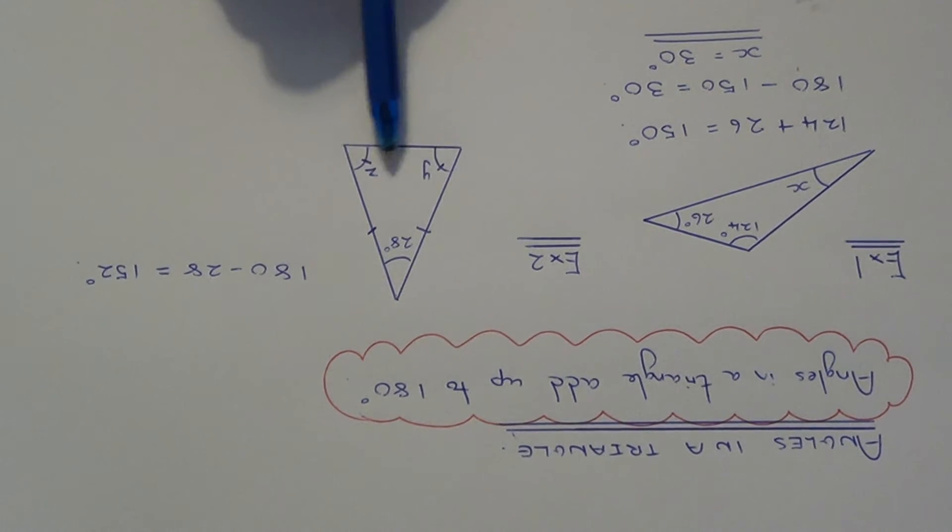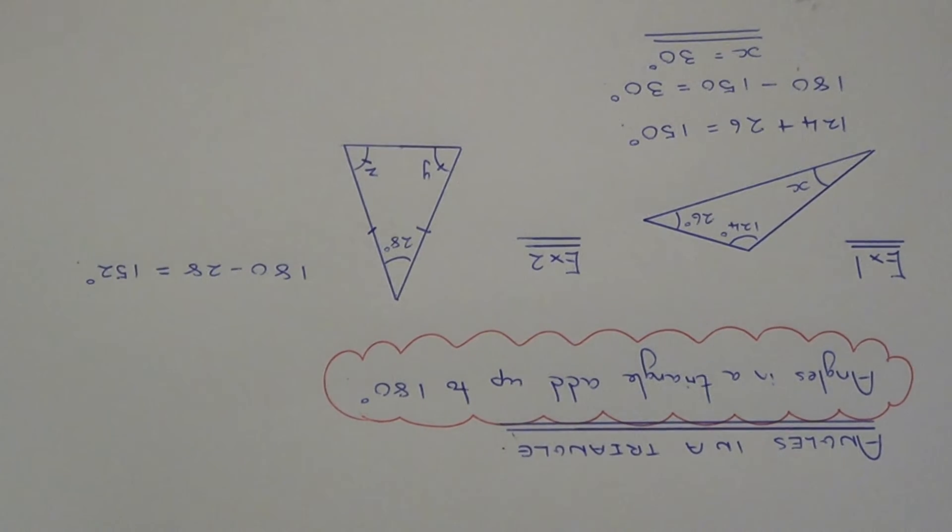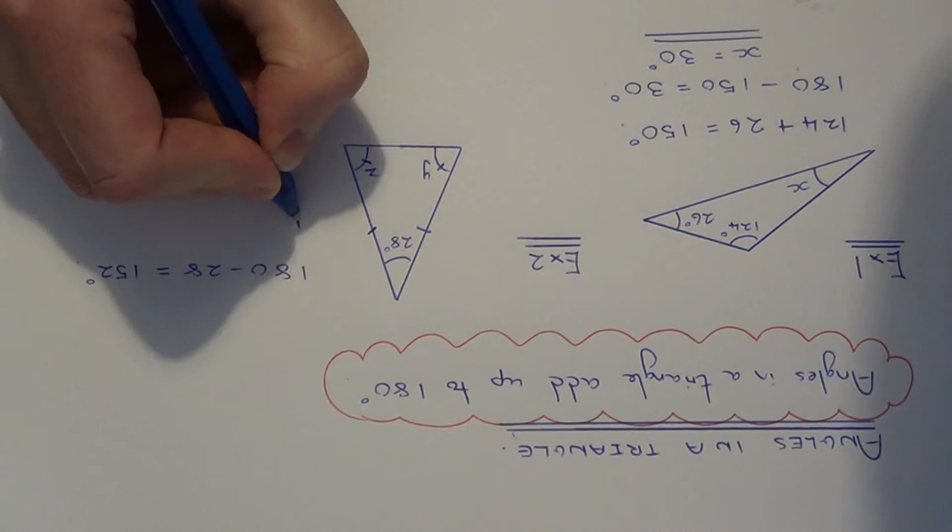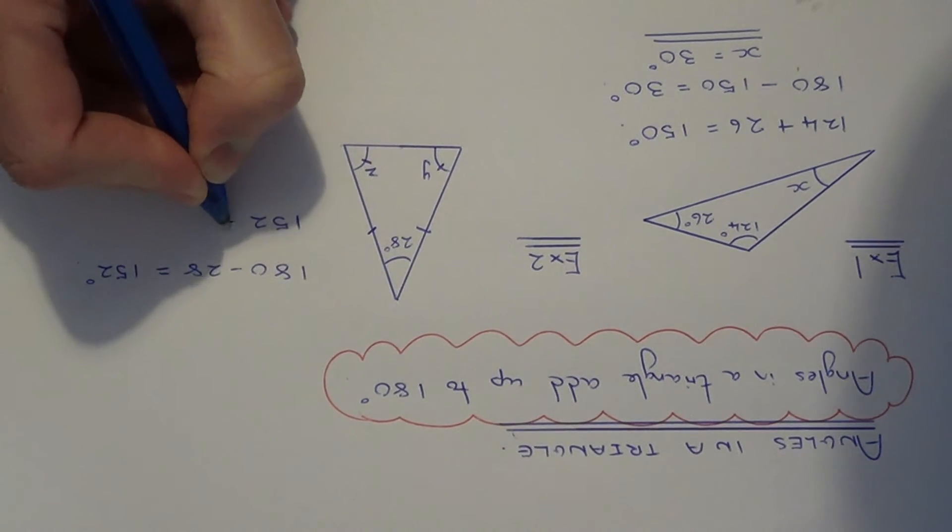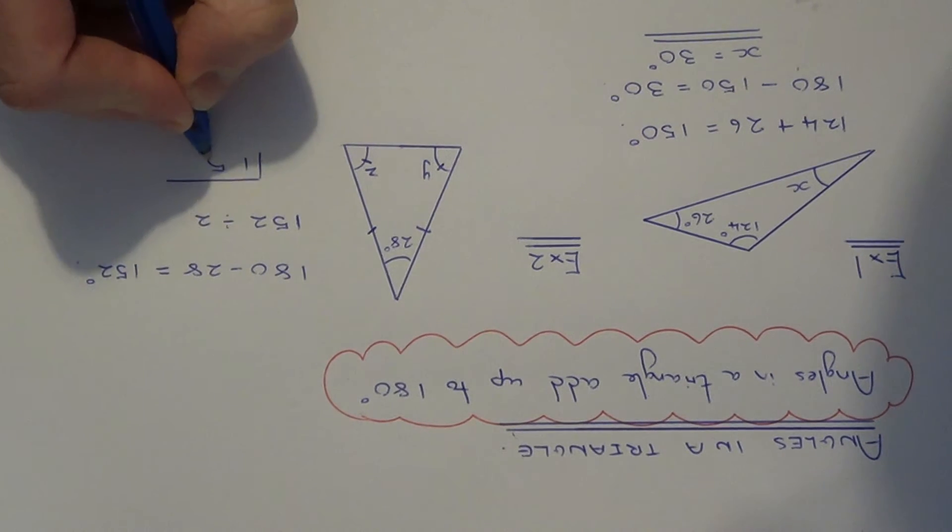Both can't be 152 degrees, so we need to divide this by 2 because both angles are the same. So 152 divided by 2—try some short division.